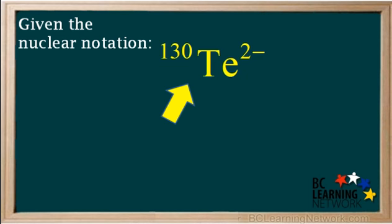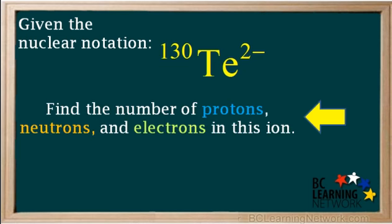Given the nuclear notation tellurium-130, find the number of protons, neutrons, and electrons in this ion.